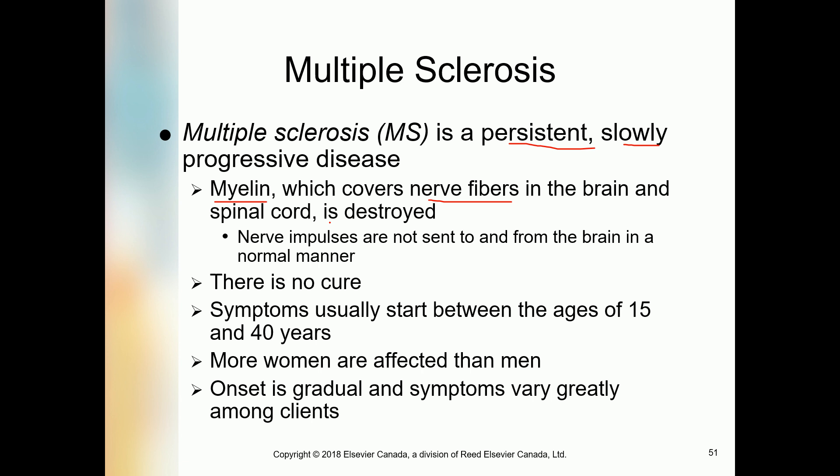Think of it like an electric wire covered by plastic fiber. In the same way, our nerves in the brain are covered by the myelin sheath, which gradually, persistently, and progressively keeps on being destroyed, slow by slow. As a result of this destruction, nerve impulses are not sent to and from the brain in a normal manner — the normal functioning of the nerve fiber is totally impaired.